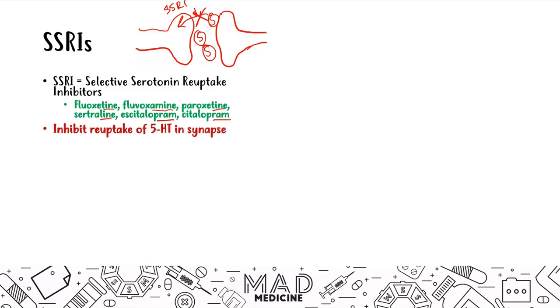SSRIs inhibit the reuptake of serotonin in the synapse, and this leads to increased 5-hydroxytryptamine — that's what 5-HT stands for — or serotonin levels in the synaptic cleft.